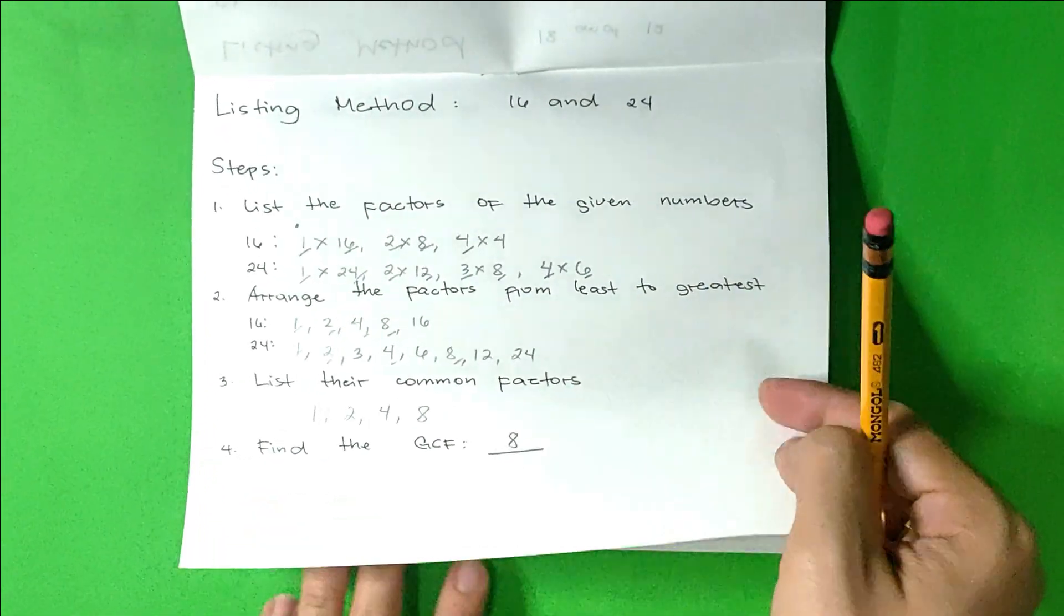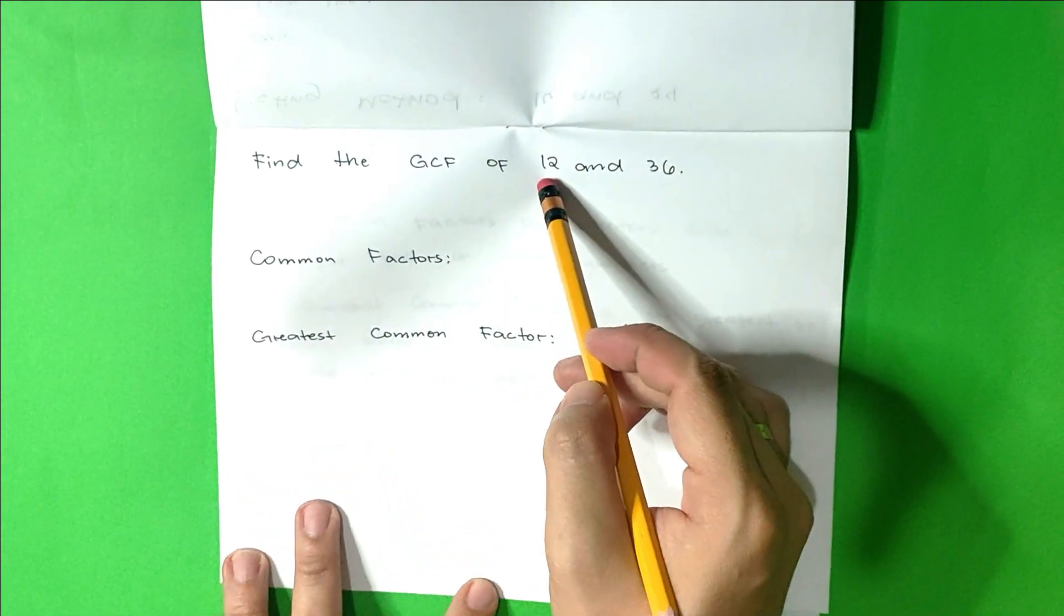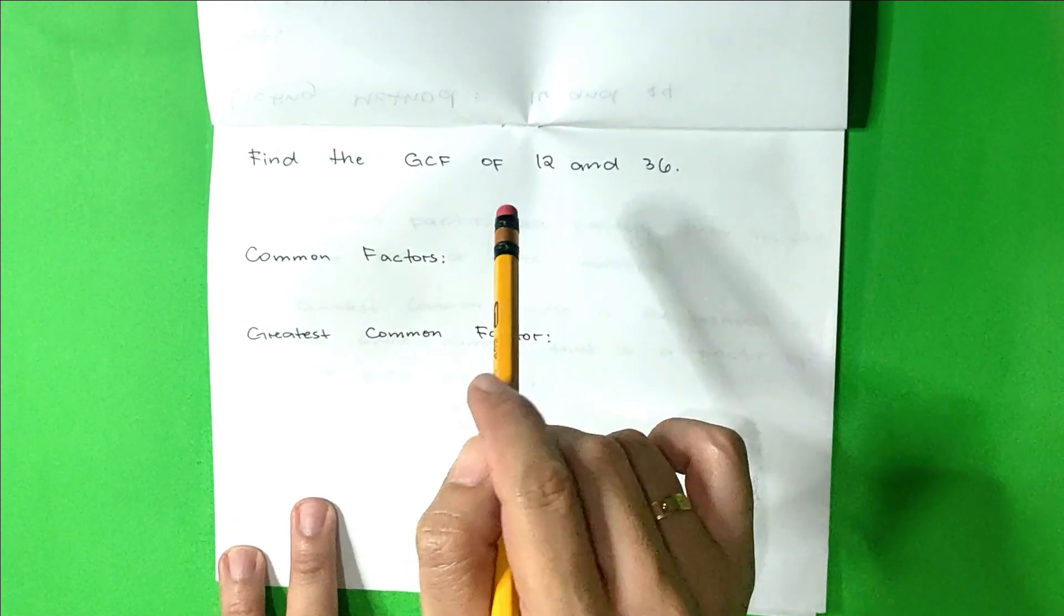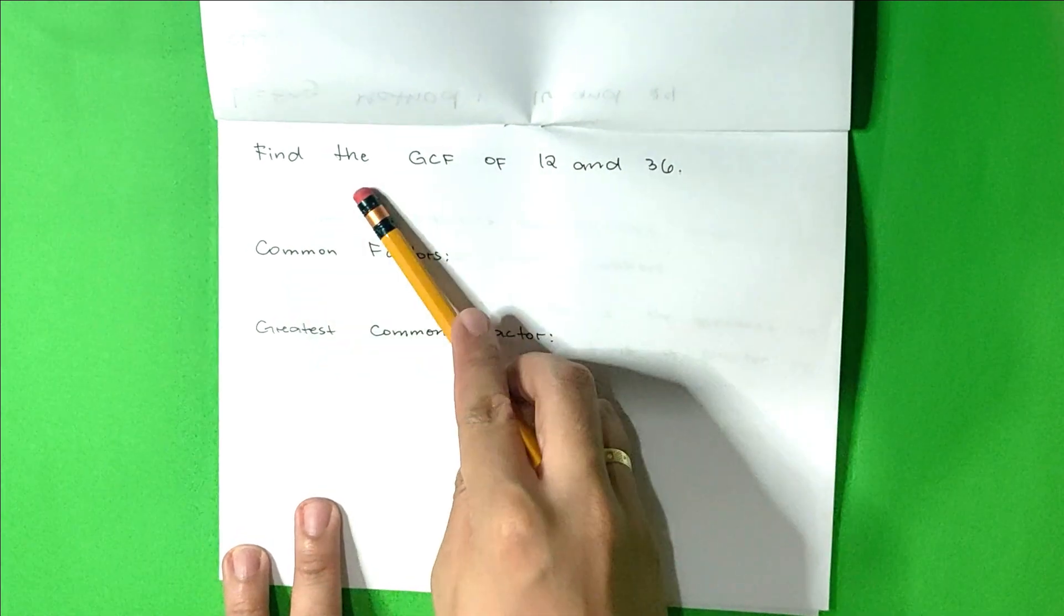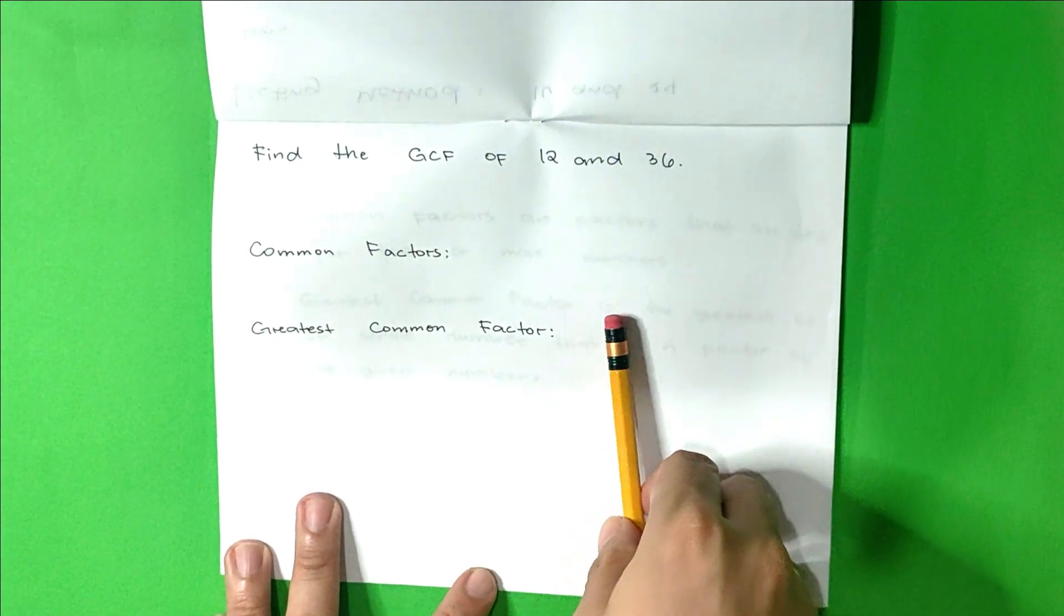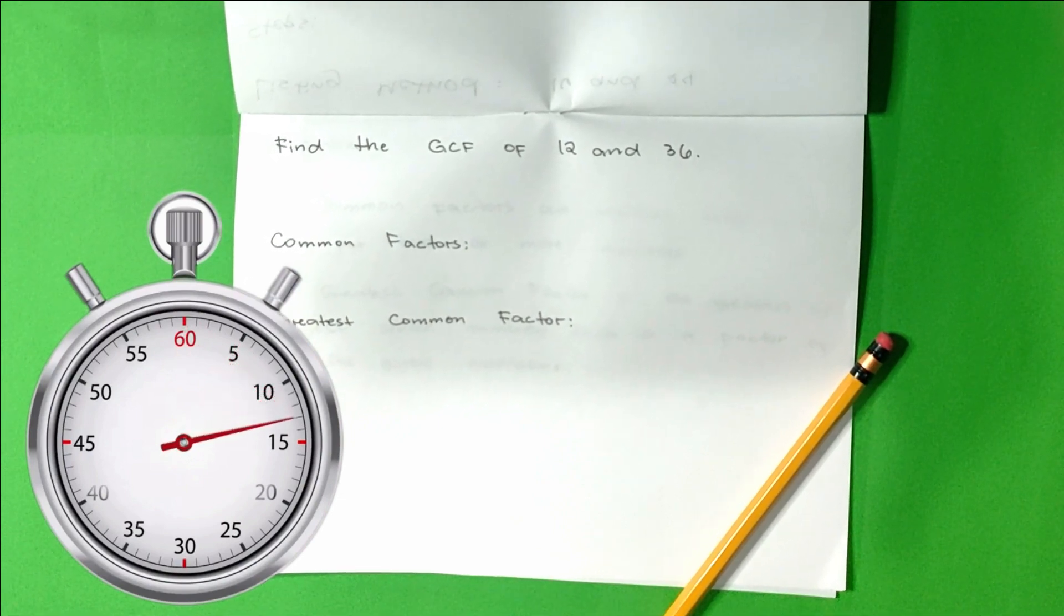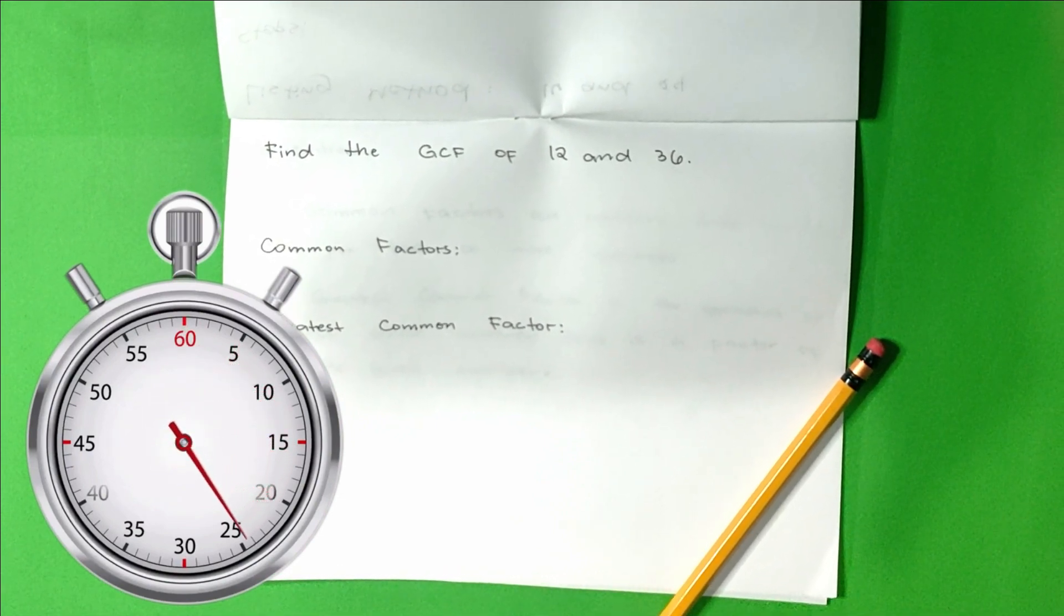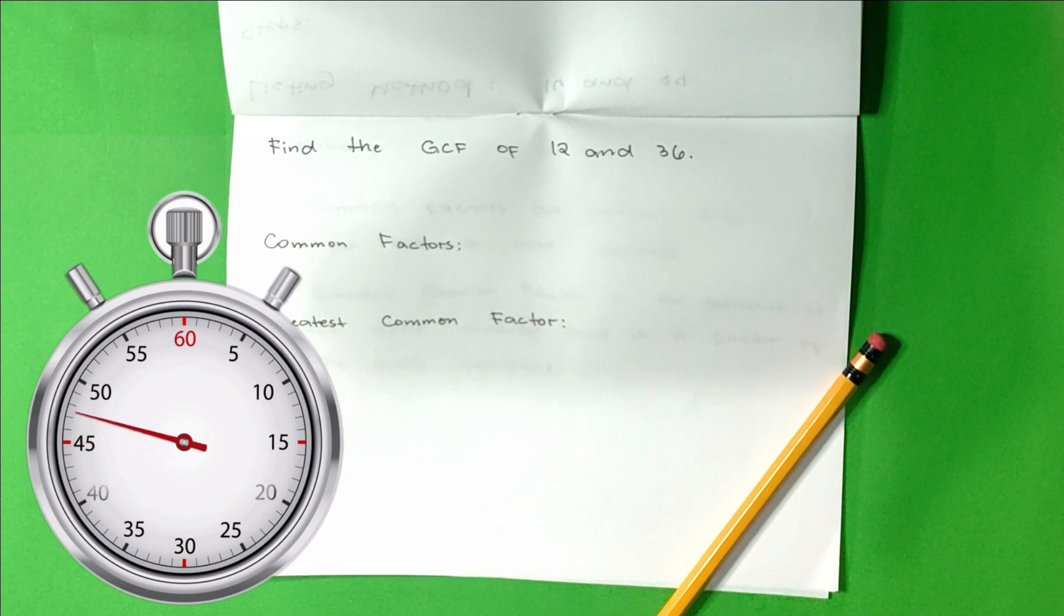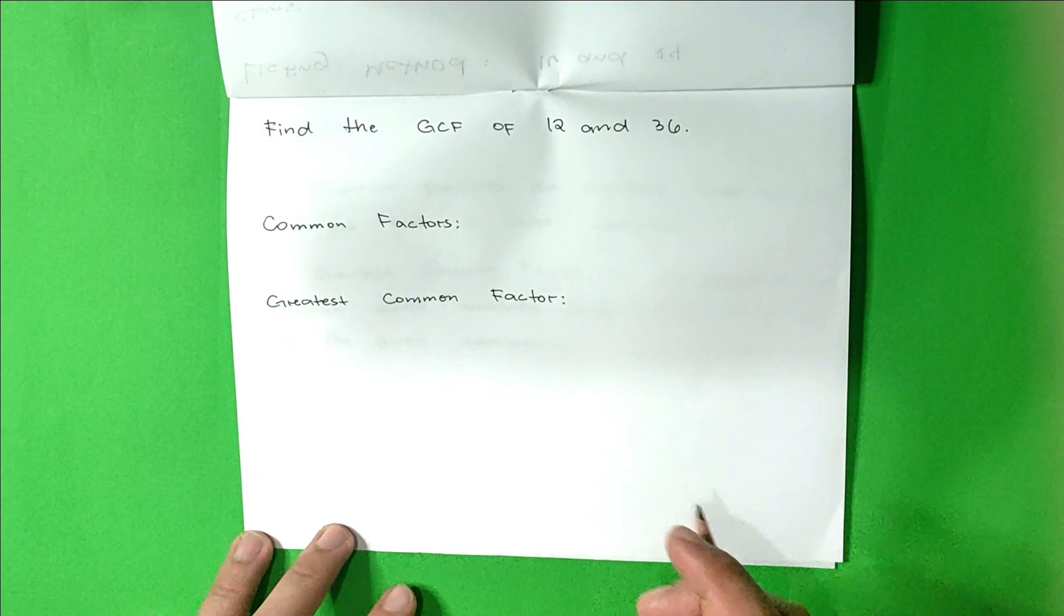Now it's your turn. Find the GCF of 12 and 36. I will give you 1 minute to answer. Find the GCF of 12 and 36. Your 1 minute starts now. Time's up.